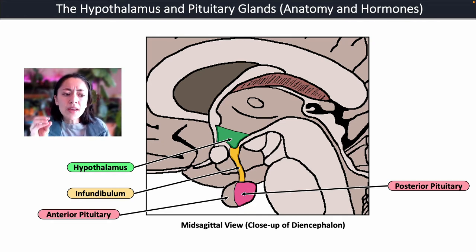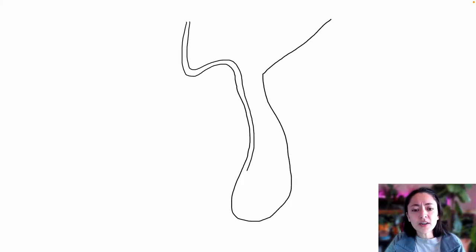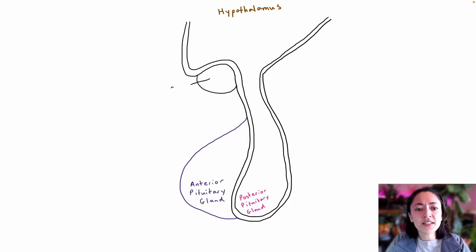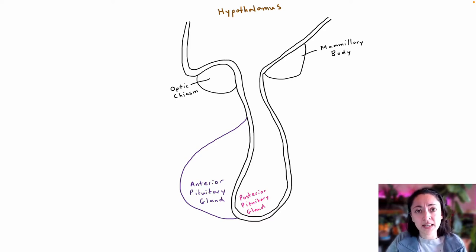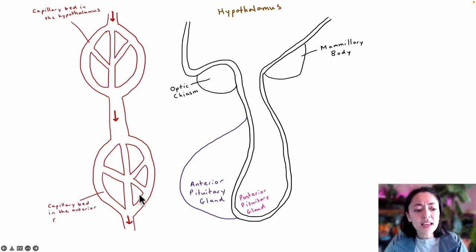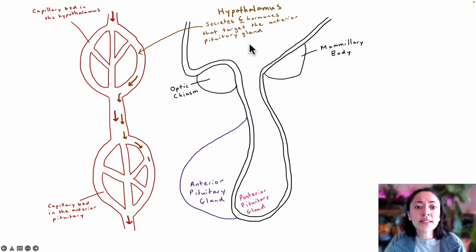Let's look at the relationship between the hypothalamus and these pituitary glands in more detail. Here you can see an outline of the hypothalamus, the posterior pituitary gland, and in front of the posterior pituitary gland, the anterior pituitary gland. Other structures in these areas include the optic chiasm and the mammillary body. The hypothalamus communicates with the anterior pituitary gland through hormones secreted into the blood, via capillary beds associated with both structures. The hypothalamus produces six major hormones and secretes them into the blood, where they target the anterior pituitary gland.